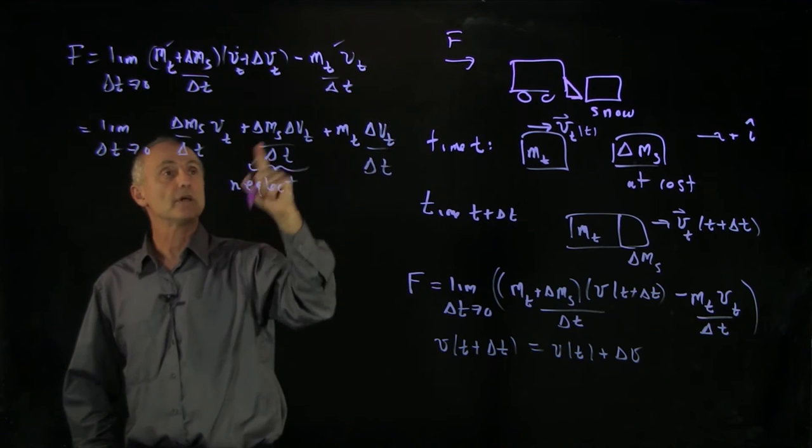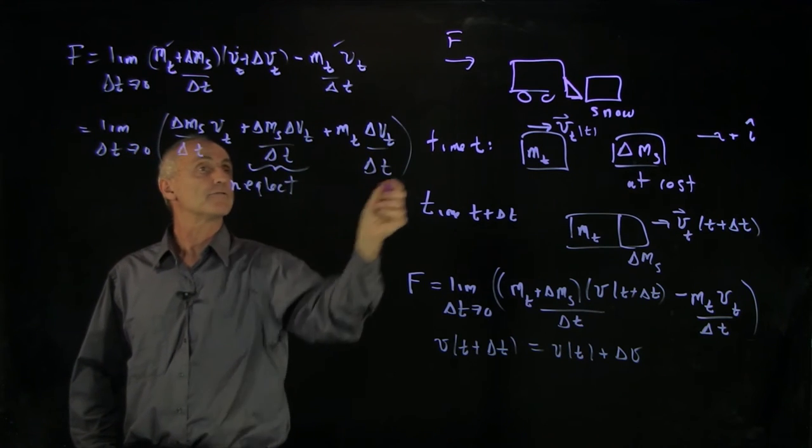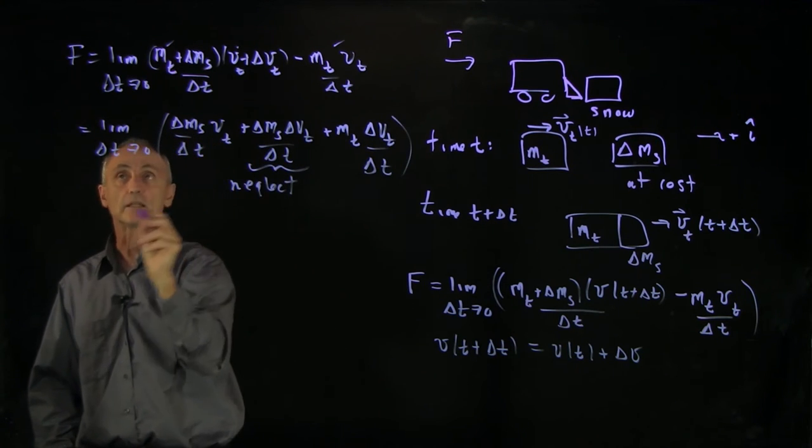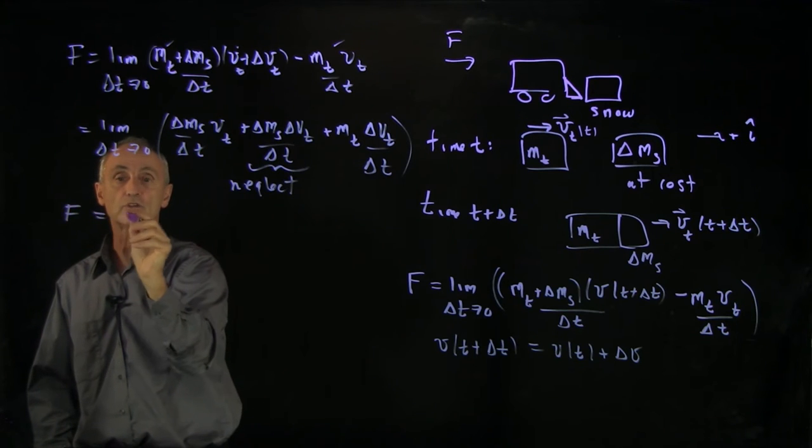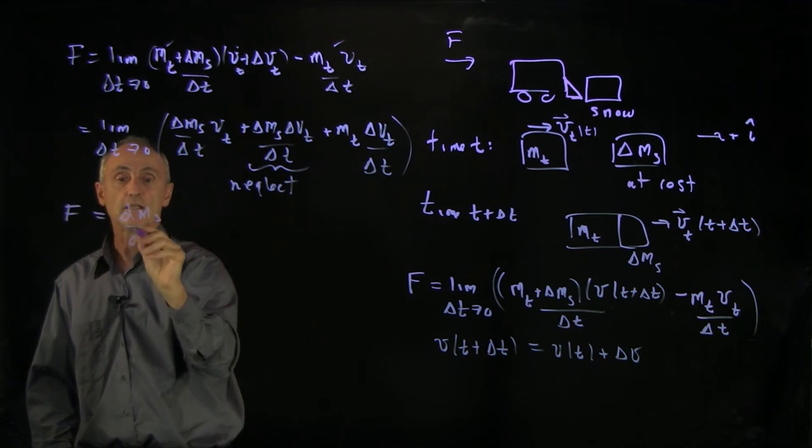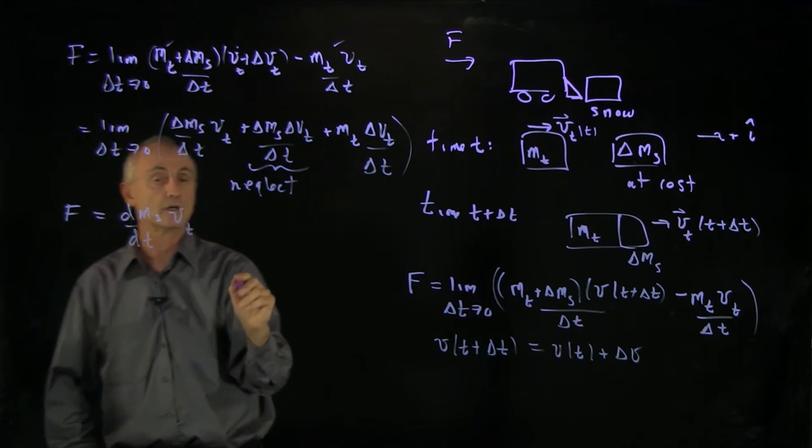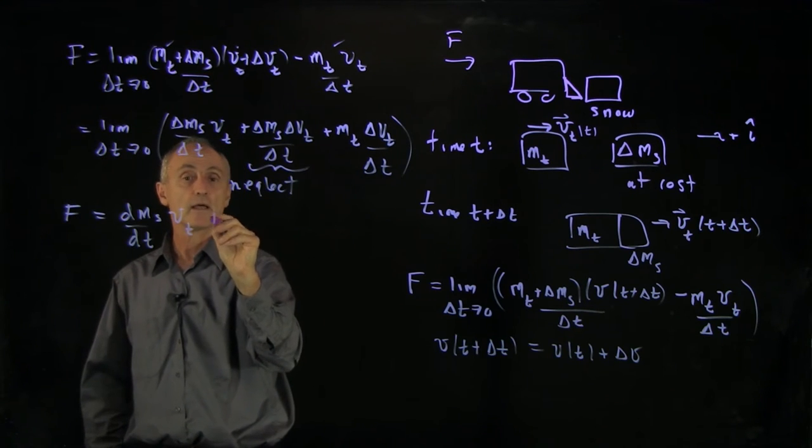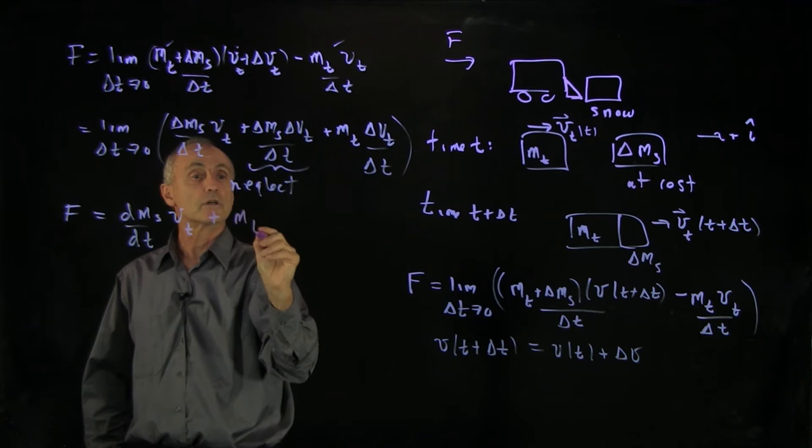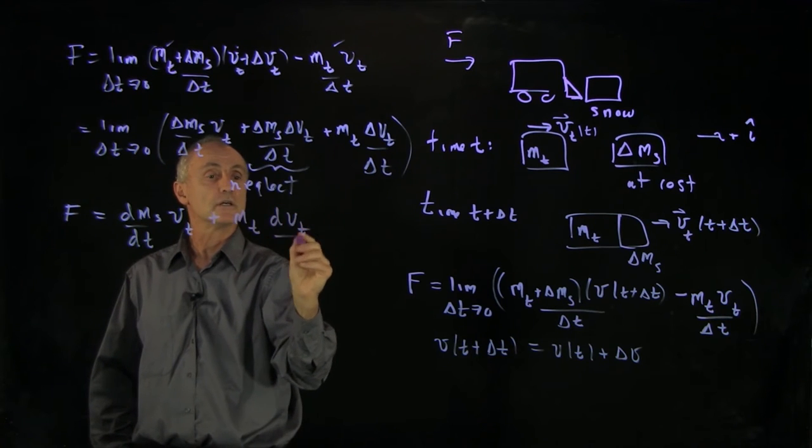And finally, we have the term of mass of the truck times delta vt delta t. So neglecting the second order term in differentials, what we get when we take the limit is that we get the force is dms dt, the rate that the snow is being picked up, times v of the truck,